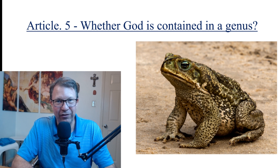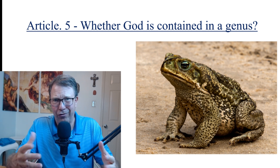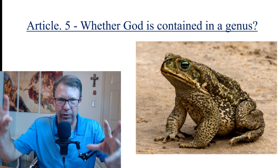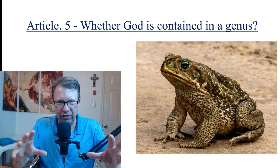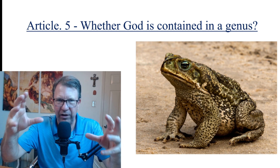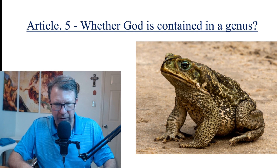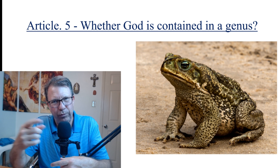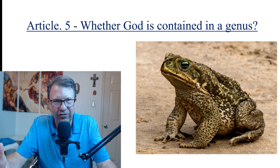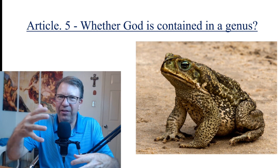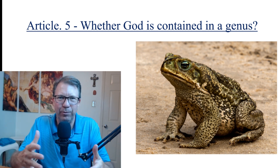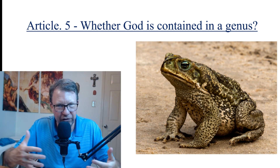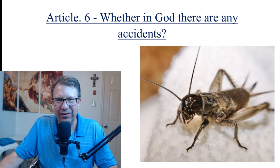Article five: is God contained in a genus? Aristotle was one of the first to classify all the animals — they have scientific names and are all categorized with genus, species, and familia. But God is not like that; you can't put him in a box and classify him, because as we just learned, God is existence. God isn't part of existence; he's not a thing within existence — he is existence himself. Whereas this toad is contained in a genus because he participates in existence.